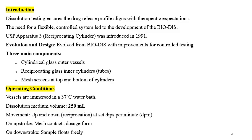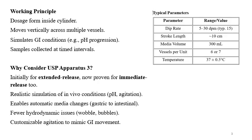Dips per minute is the speed parameter for this apparatus. Typical parameters include a dip rate of 5 to 30 dips per minute, with a typical operating DPM of 15. Stroke length is around 10 cm. Media volume is up to 300 ml, with a typical volume of 250 ml. There are 6 vessels per unit, and temperature is maintained at 37°C.